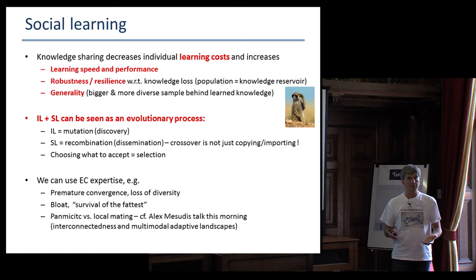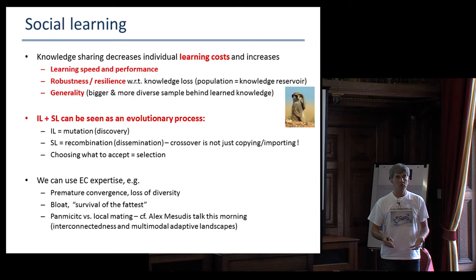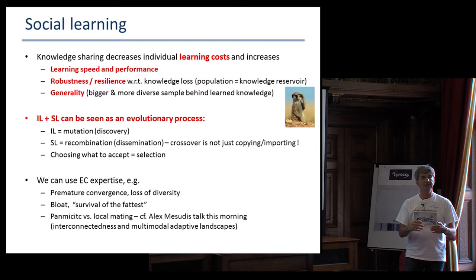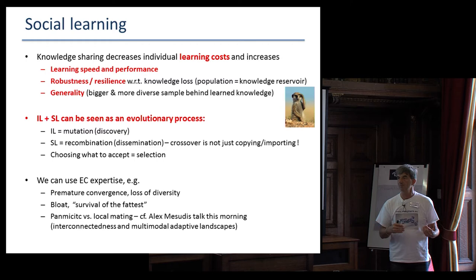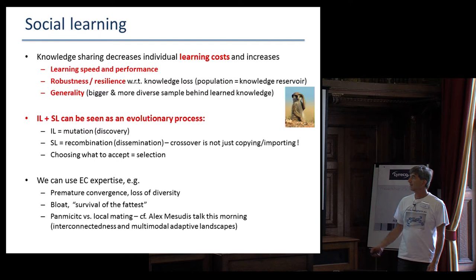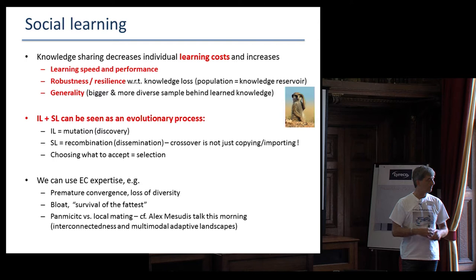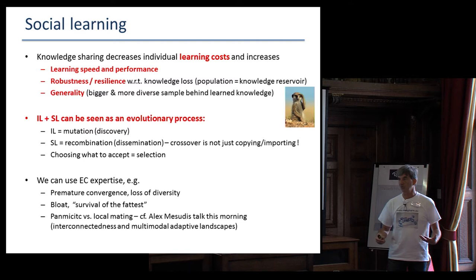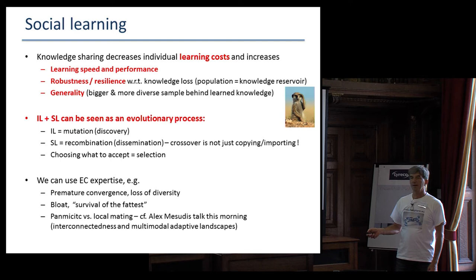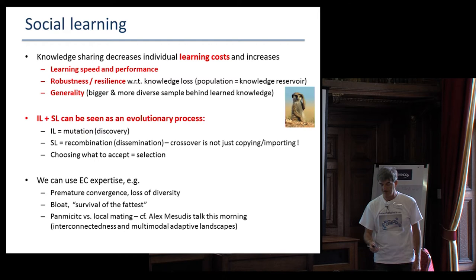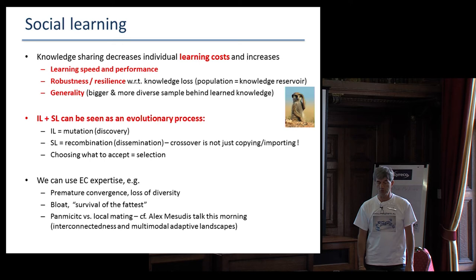If social learning can be seen as an evolutionary system, then knowledge that has been developed in evolutionary computing can be used to develop and study and analyze these kind of systems. For instance, we know about premature convergence, loss of diversity. You climb a local optimum, you don't get the global optimum. It's a phenomenon that has been studied. We have a couple of tricks to cope with that. Or bloat, survival of the fattest. If the system allows constructs to grow, then they will grow. So this is known in genetic programming, but in all parts of evolution computing where you have variable size data structures. Or panmictic or local mating. This morning I reacted to your talk. Interconnectedness and multimodal adaptive landscape. So this is a piece of knowledge that was readily present in evolution computing. And the phenomenon seems to be very similar in the social learning context.